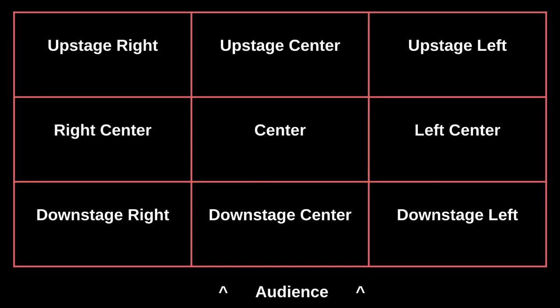First, we'll review the stage positions grid found in a proscenium theater. Remember that this grid is from the actor's perspective. So if you're standing center stage, in front of you will be downstage center, and right behind you will be upstage center. To your right is right center, to your left is left center. In the corners are upstage left, upstage right, downstage left, and downstage right.